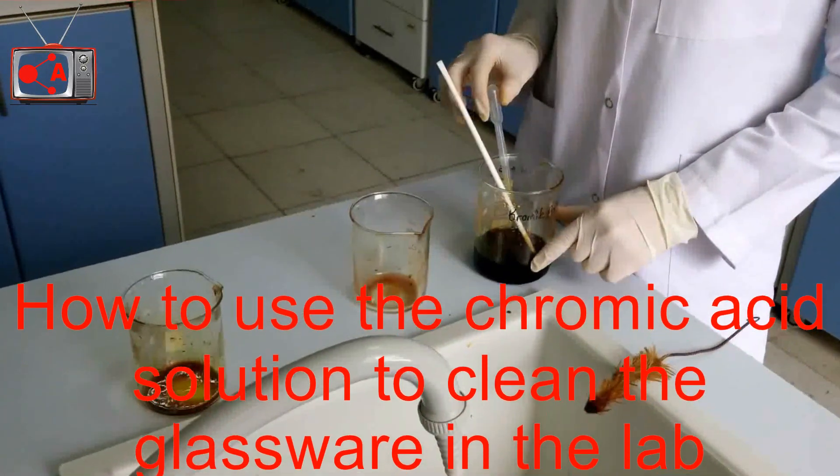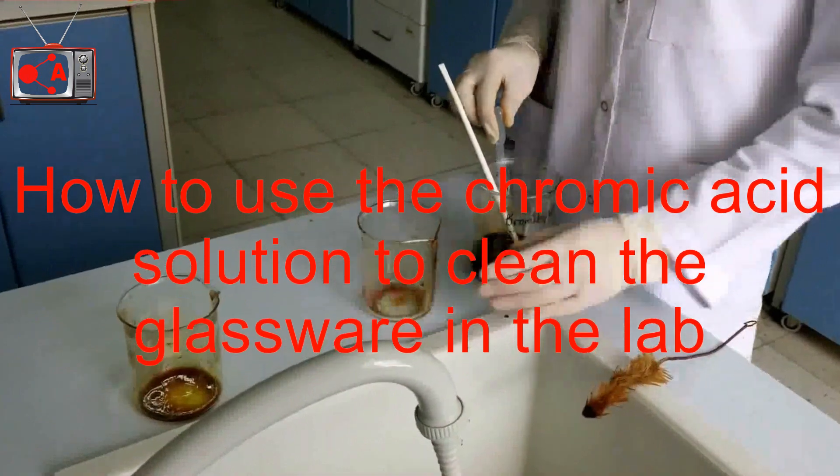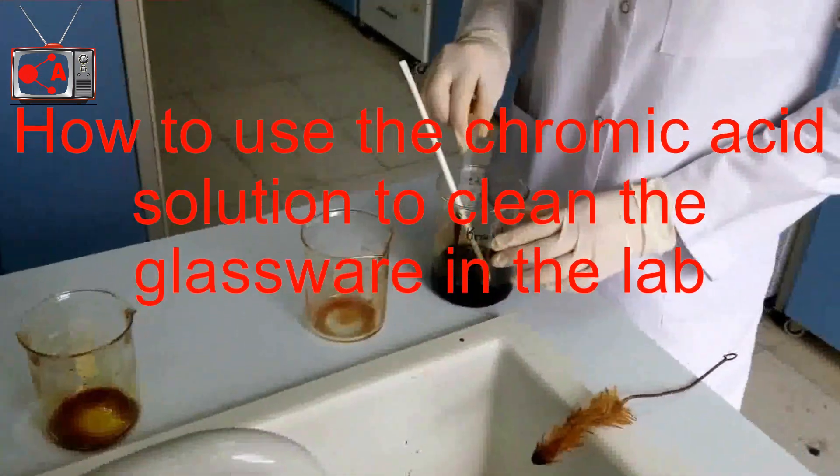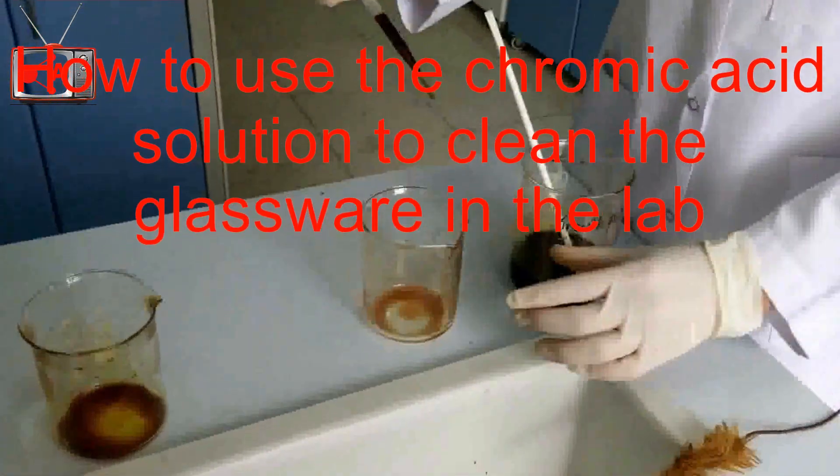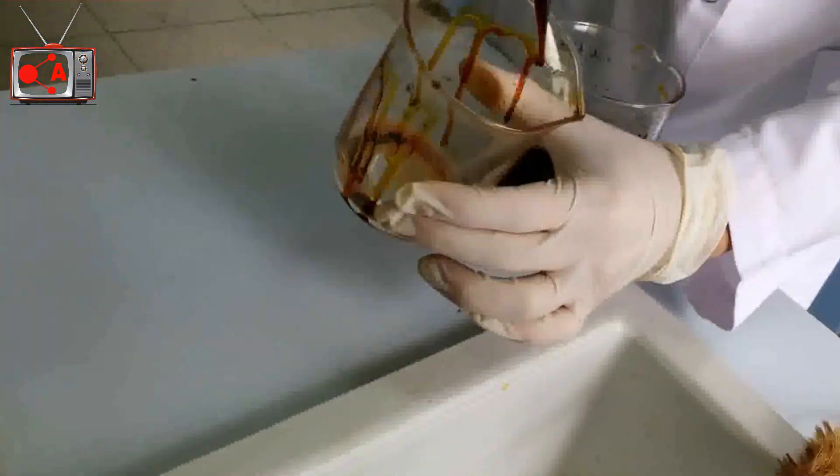Hi, this is chromic acid solution we have already prepared and we will use that solution to clean this beaker. As you see, this beaker is too dirty. There is dirt and residue of chemicals on the walls of the beaker.